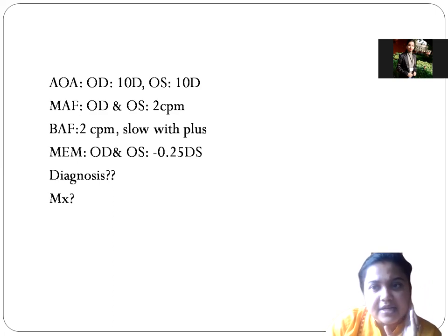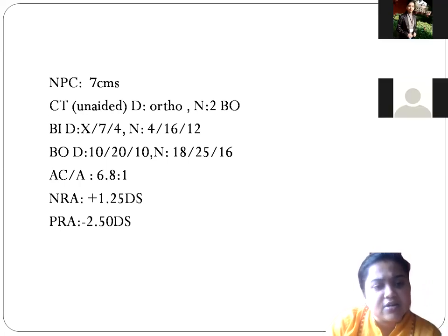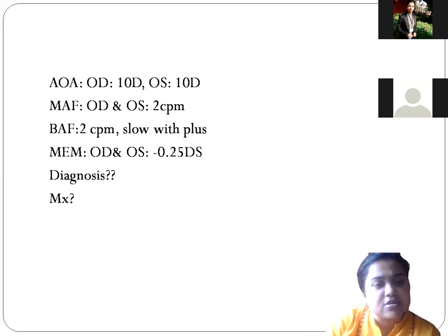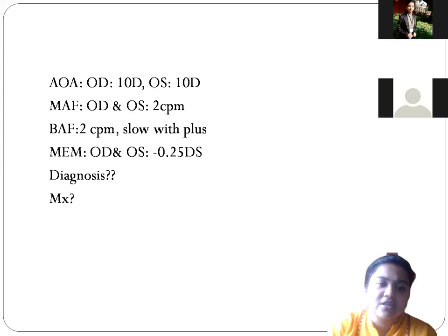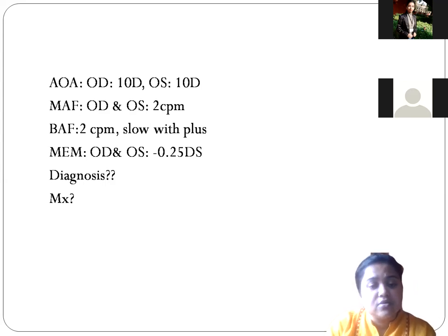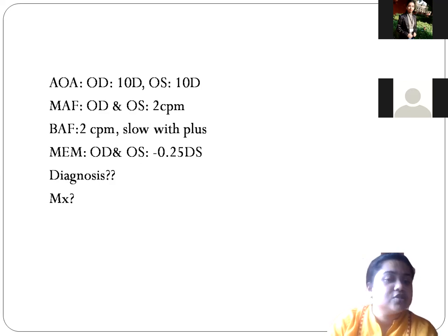Looking at the NRA/PRA values — NRA is plus 1.25 and PRA is minus 2.50. The patient cannot relax accommodation; that is why he finds difficulty clearing plus lenses. His NRA value should be around plus 2.50. Amplitude of accommodation at 10 diopters is almost normal — not too much over-accommodation. Monocular accommodative facility is only 2 cycles per minute with a plus/minus 1 flipper. Binocular accommodative facility is also 2 cycles per minute, slow with plus.